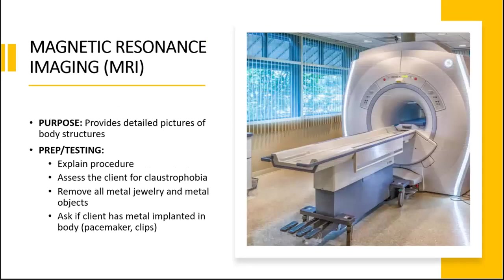Magnetic resonance imaging provides a detailed picture of body structures. Explain the procedure. Because the client will be inside the MRI machine, assess for claustrophobia. Remove all metal jewelry and metal objects — since the machine is magnetic. Ask if the client has metal implanted in the body, such as pacemakers or clips, and have them removed if possible before placing the client in an MRI machine.